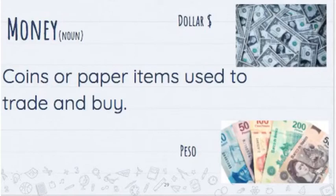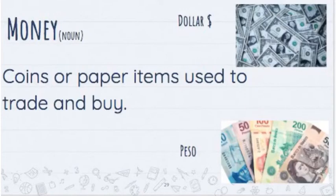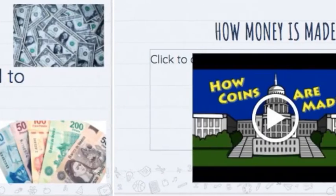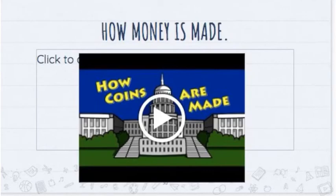Coins — coins or paper items used to trade and buy. At the top right we see a United States dollar, that's what we use. Underneath it — where do you think that money comes from? If you said Mexico, you're correct. Instead of calling it a dollar, paper money there is called a peso, and coins are called that as well. Money is different in every country — here we use the dollar. What can you use a dollar to buy?